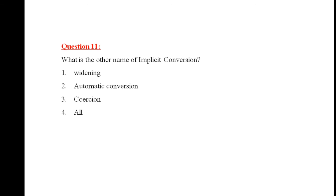Question 11: What is the other name of implicit conversion? Option 1 is widening, option 2 is automatic conversion, option 3 is coercion, and option 4 is all of the above. The right answer is number 4 — all of the above.